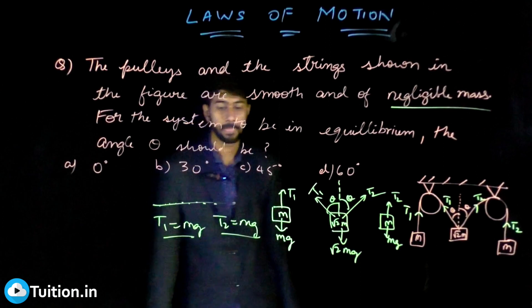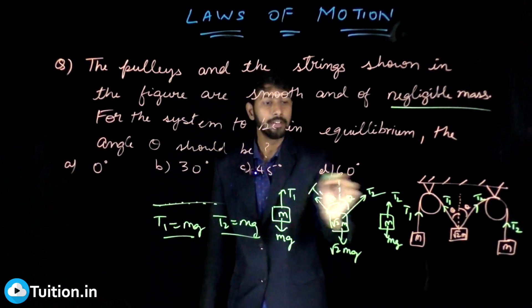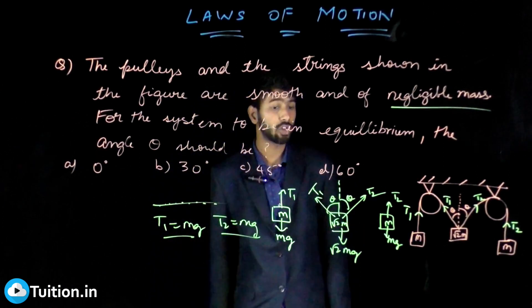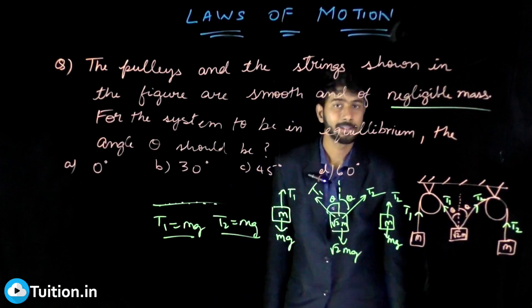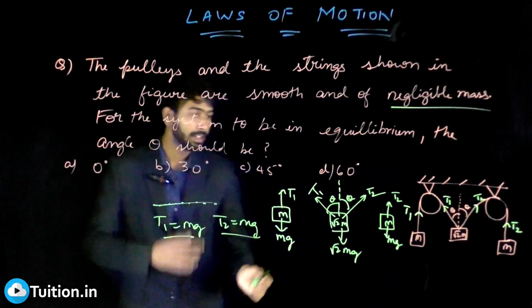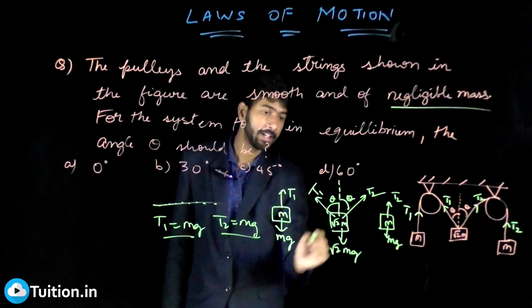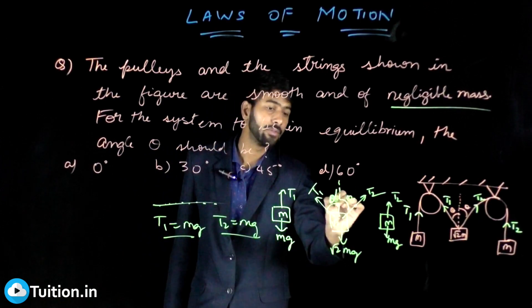So even if it was not given to you that theta—both of them are not thetas—what you have to do is actually split this into components. If I gave you an alpha and a beta here, then what you would do is T1 sin alpha is in this direction on √2m.